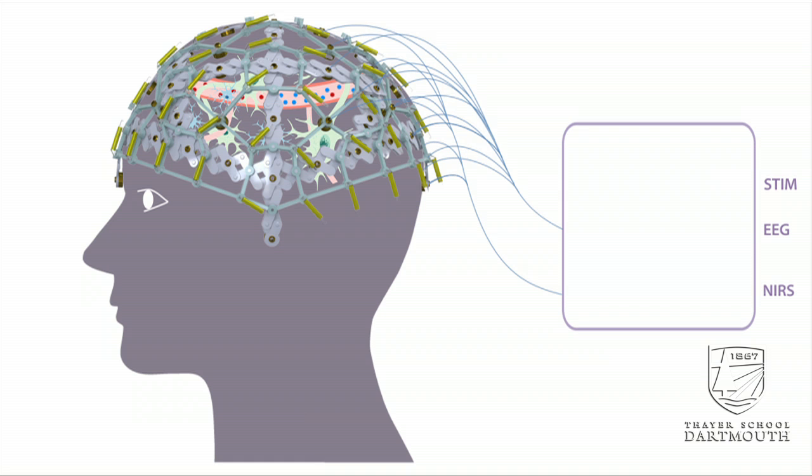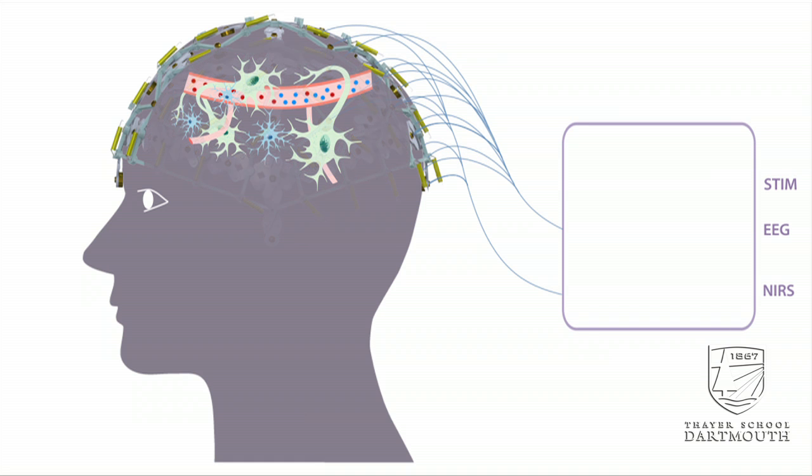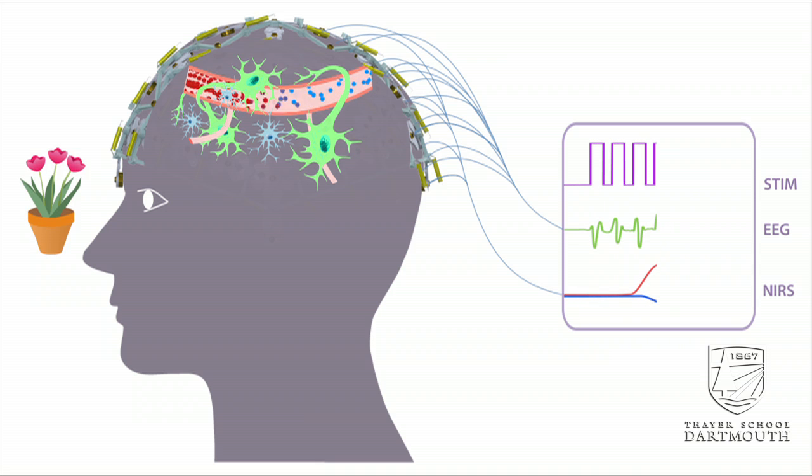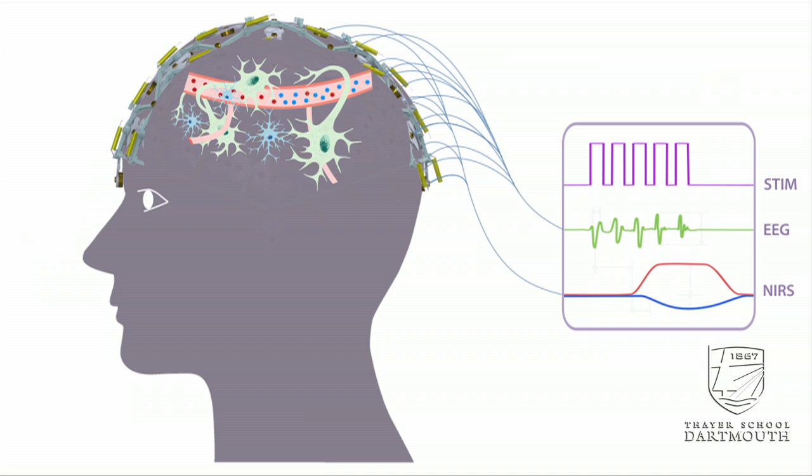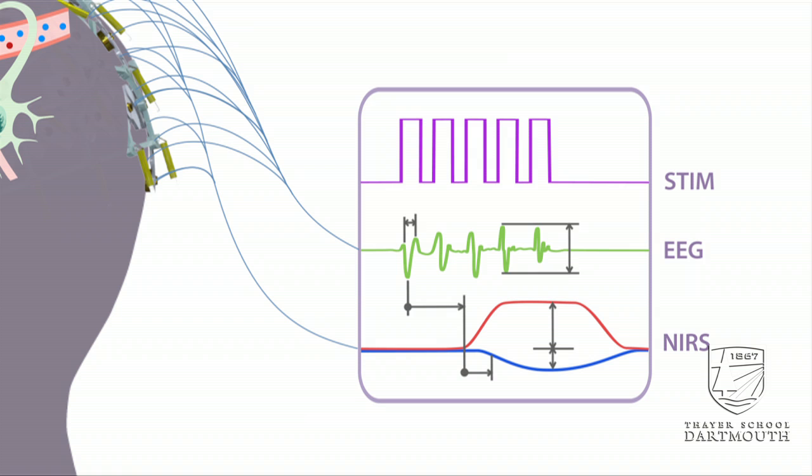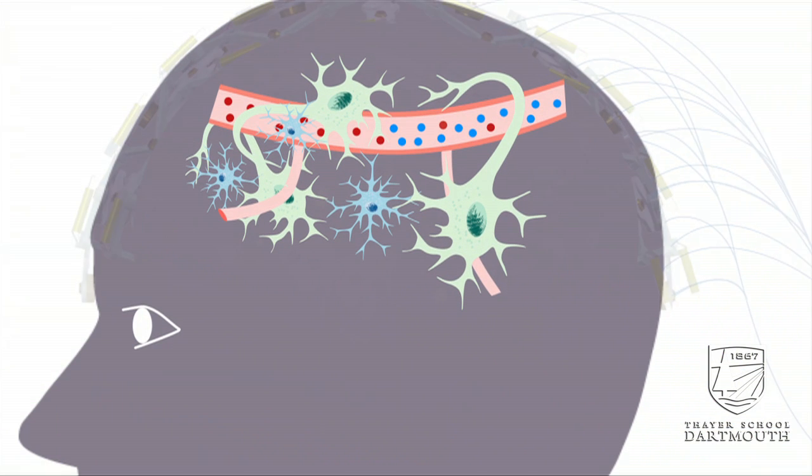These signals respond dynamically to simple stimuli. The EEG signal comes from synchronous firing of neurons. The NIRS signal comes from vasodilation and changes in blood oxygenation. We quantify the coupling between neural and vascular activity by automatically extracting features of the EEG and NIRS waveforms that indicate relative timing and amplitude.